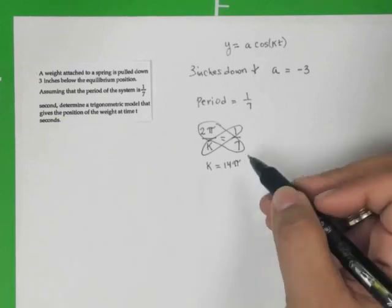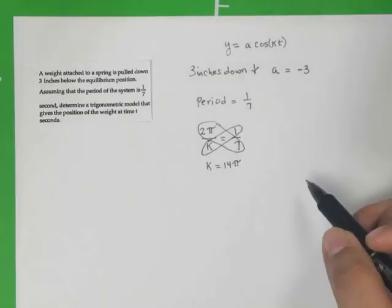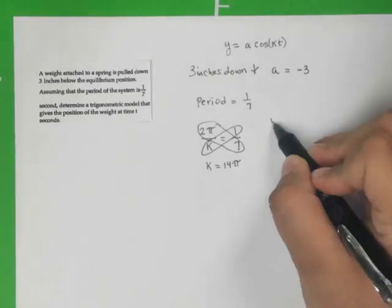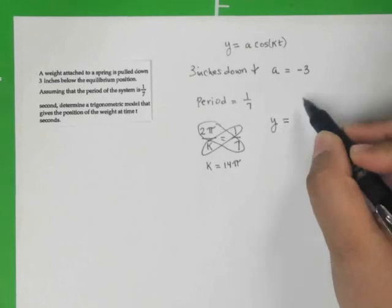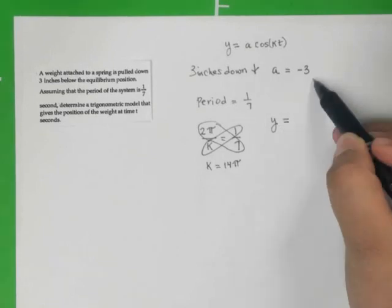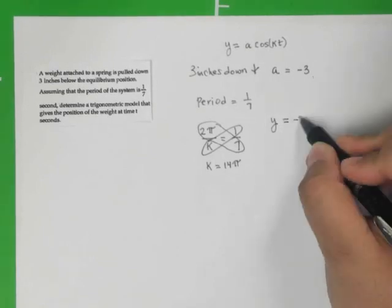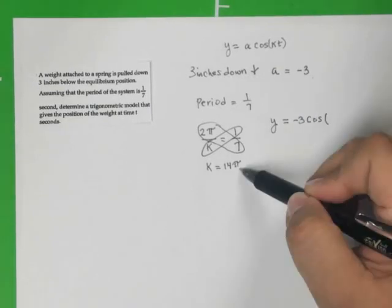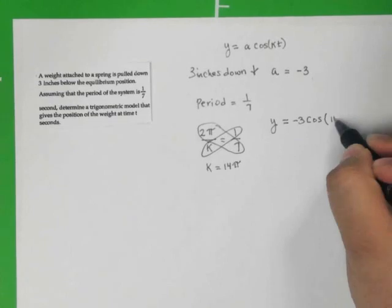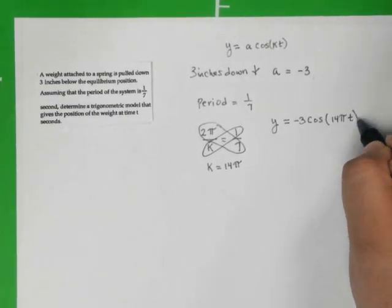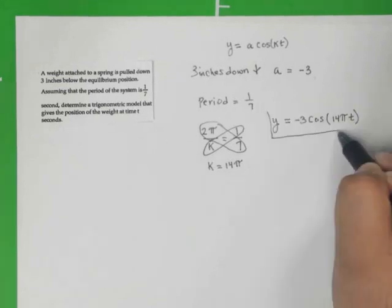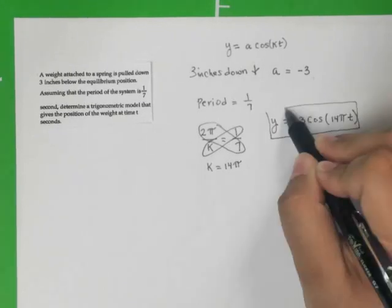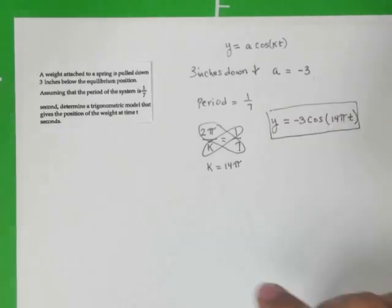So now I think we have enough information to come up with the equation for this graph. And we can say that y equals, again, a being our negative three, negative three in this case, cosine. And our k value that we solved for was 14π, so 14π times t. And that will give us the equation that we needed, which is the trigonometric model that will give the position of this weight at a particular time.